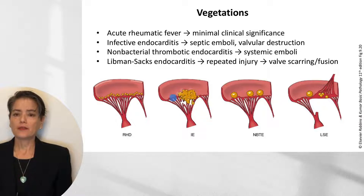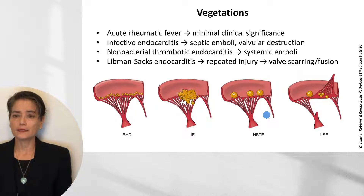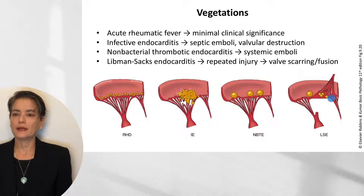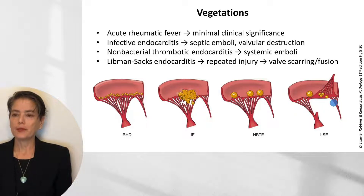Non-bacterial thrombotic endocarditis tends to arise in the setting of a procoagulant state. These vegetations are sterile, composed of fibrin and platelets, and they're loosely attached to the valve. Like the vegetations in infective endocarditis, they can be flicked into the circulation where they can cause systemic emboli — but they are not septic because these are sterile. In Liebman-Sachs endocarditis, we can get vegetations pretty much anywhere on the valves or even the wall of the heart, due to repeated injury. These can cause valve scarring and fusion, and don't tend to produce emboli, but they can cause damage that resembles chronic rheumatic heart disease.